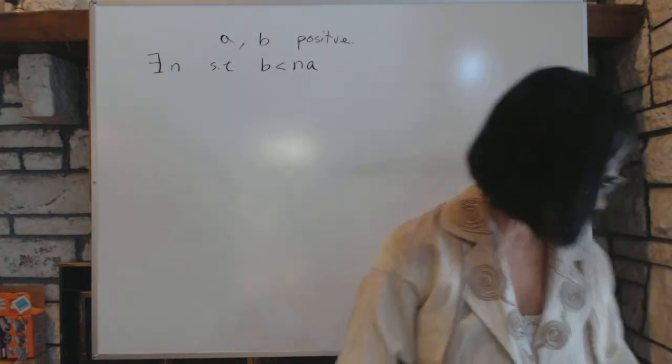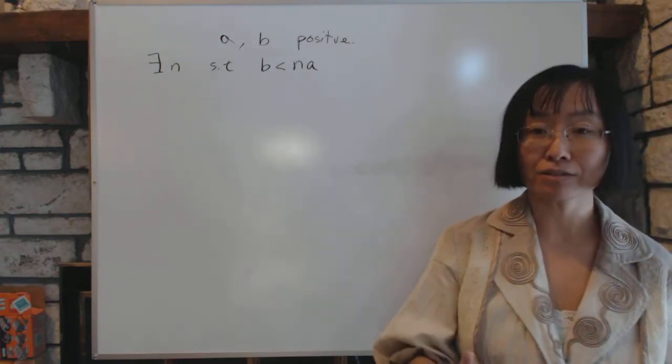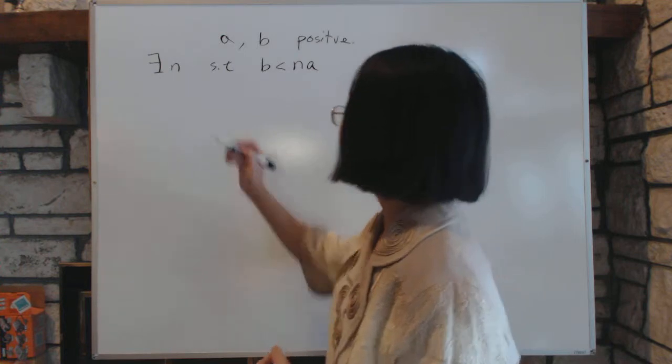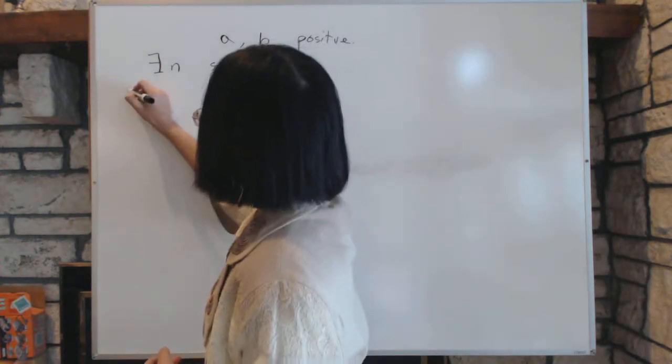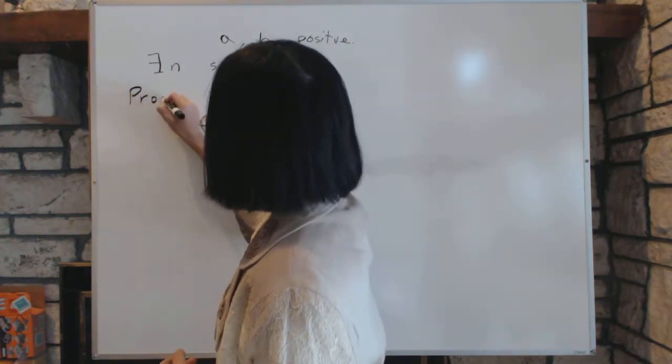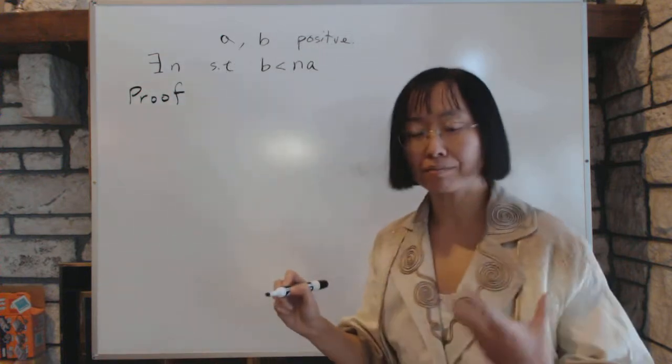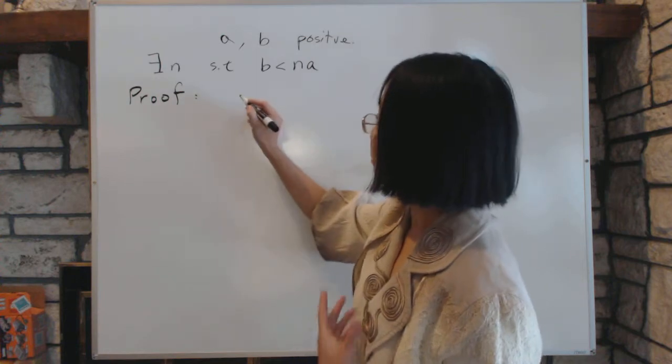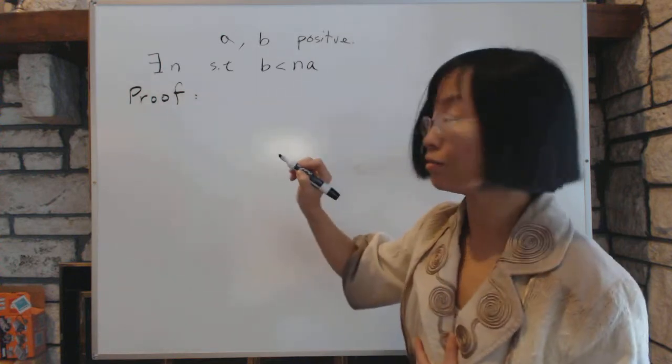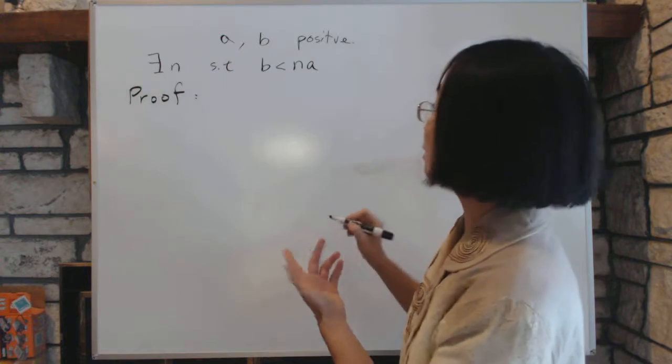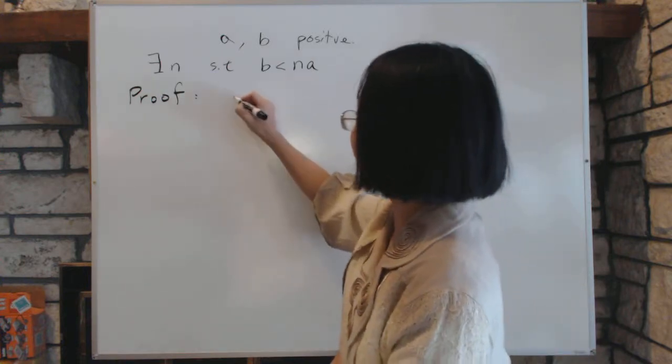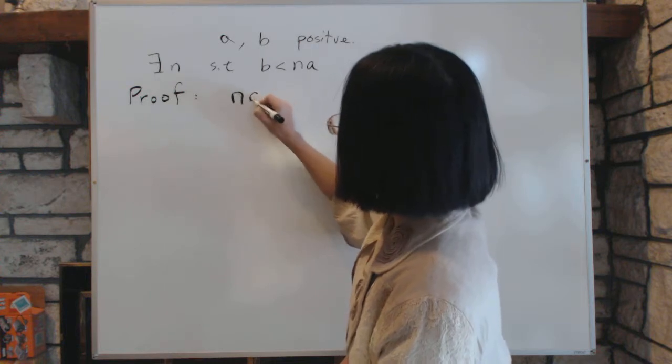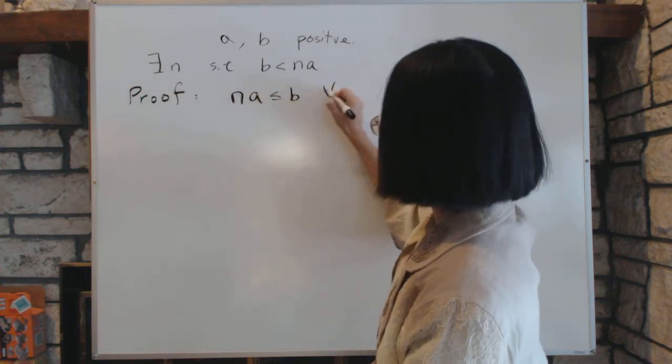For the proof, we'll divide the real number system into two sets. First we suppose the false. Suppose this statement isn't true. That is, suppose that we'll assume that NA is less than or equal to B for all N.